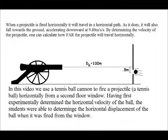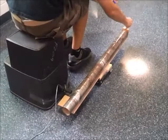Having first experimentally determined the horizontal velocity of the ball, the students were able to determine the horizontal displacement of the ball when it was fired from the window.